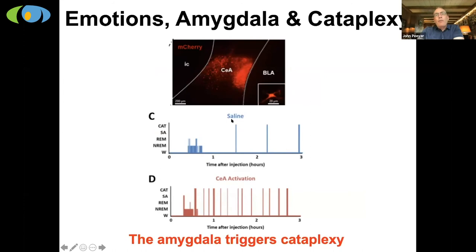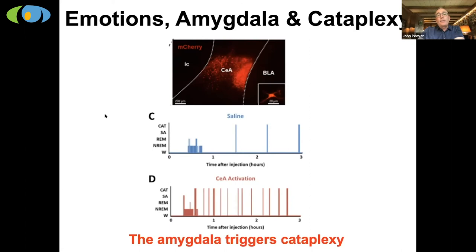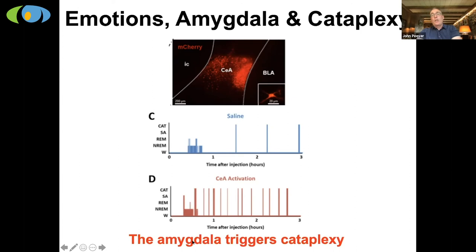Here's one of our mice with narcolepsy, with thousands of tiny red cells in the amygdala. What we found is that when we activated cells in the amygdala, we made cataplexy terrible for our narcoleptic mice. Under normal conditions, a mouse had around three episodes of cataplexy in a three-hour period. When we activated the amygdala, that number jumped dramatically — ten, fifteen episodes of cataplexy. So the amygdala, which is important in interpreting emotion, also appears important in triggering cataplexy.